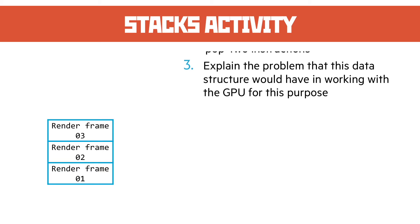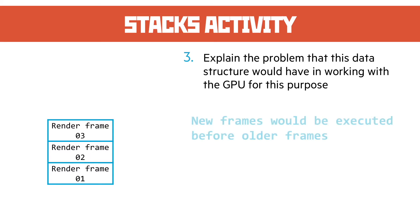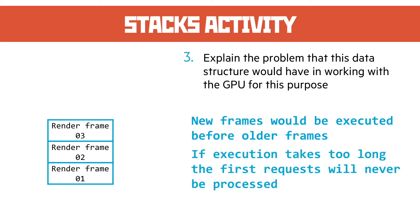Question 3: explain the problem this data structure would have in working with the GPU for this purpose. The problem with the stack is that it's last in first out, so new frames would be processed before the older frames. It could be the case that if execution takes too long, the first requests will never be processed, giving a very choppy, jagged way of rendering frames.